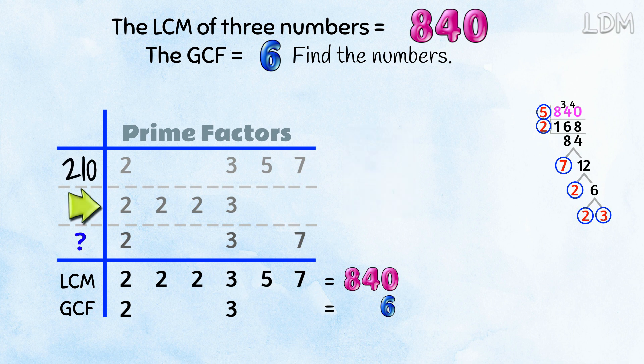Next, we've got 2 times 2 is 4, times 2 is 8, times 3 is 24. And here, 2 times 3 is 6, times 7 is 42.